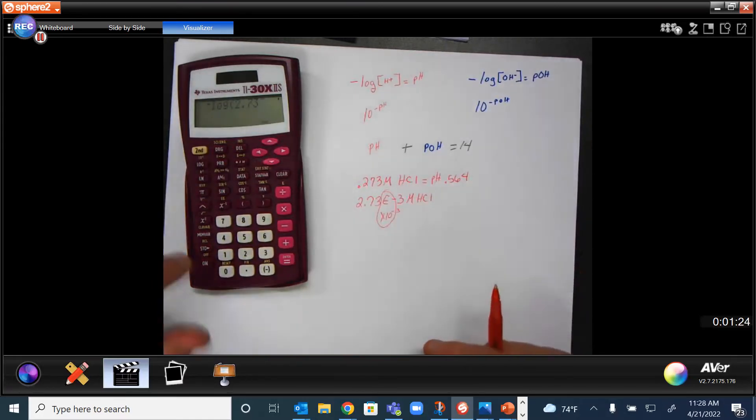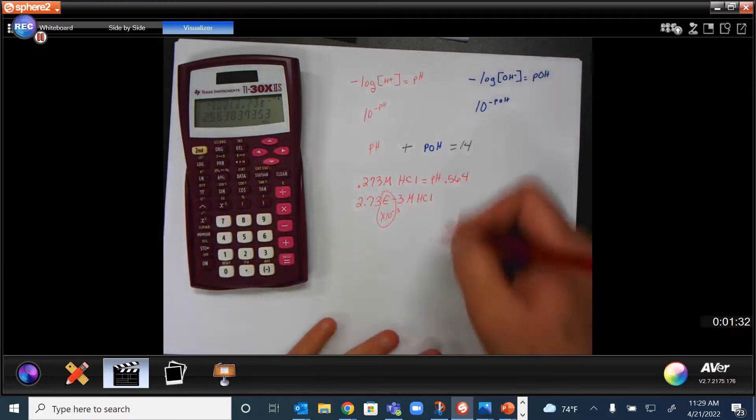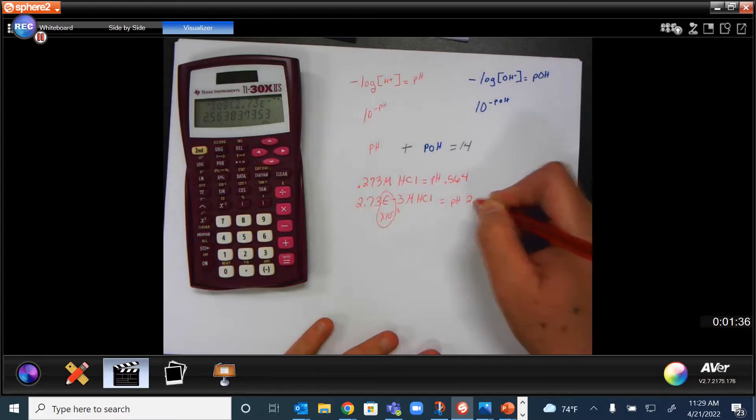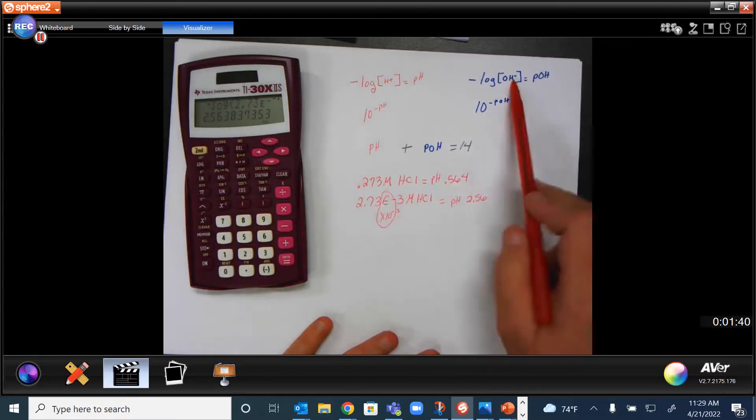So I would have second, the X minus 1 button to get the E, I would hit the negative and the 3 and close it up, and then I have a pH of 2.56. So that's how you do these two things.